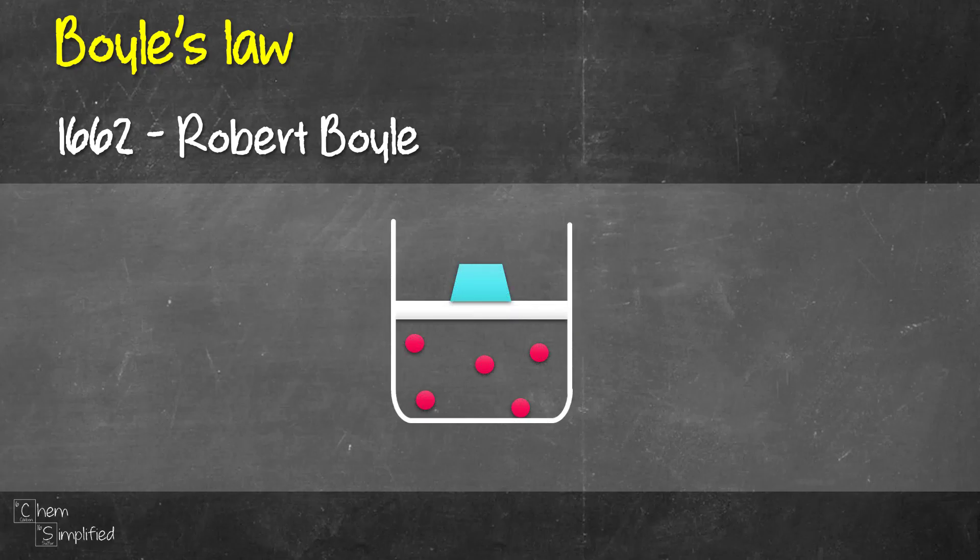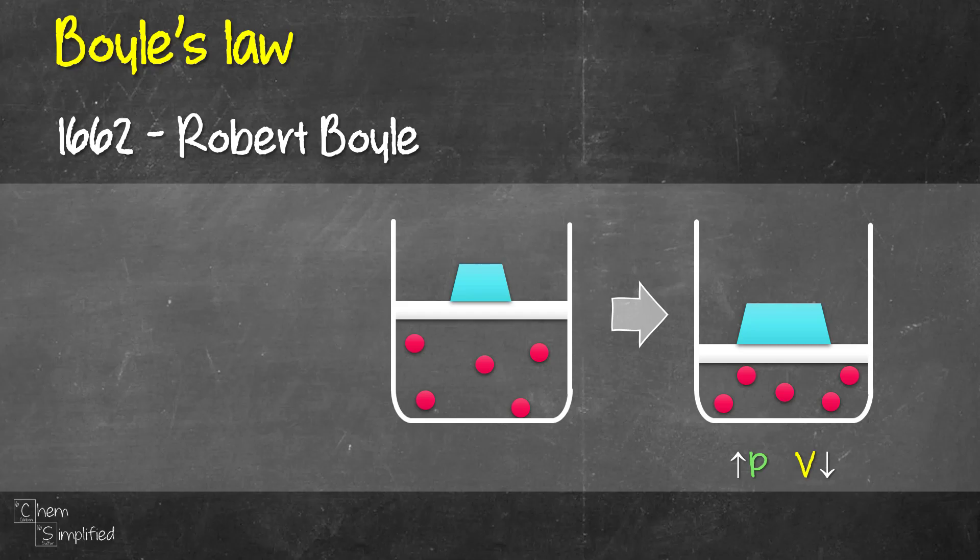Imagine we have a container with a movable lid and a weight on top of it. Inside the container, we have some gas. If we increase the weight on top of the lid, we increase the pressure on the container. The volume of the container will decrease and the gas will be compressed. If we decrease the weight on the lid, we decrease the pressure, which leads to an increase in volume so the gas expands.